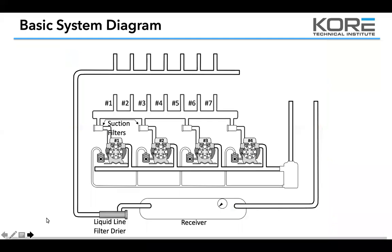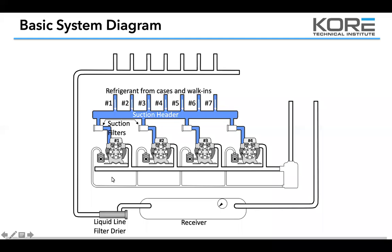Here's your basic piping diagram of the rack system. Refrigerant comes in through those EPRs. In the case, you're going to run that suction header at least two to four PSI lower than your lowest EPR setting. If you're running your suction header pressure too close to your EPR pressure — within a pound or so — you'll have a tendency with some valves to lock that valve up. Keep your header about two to four pounds lower than your lowest suction group to be safe.